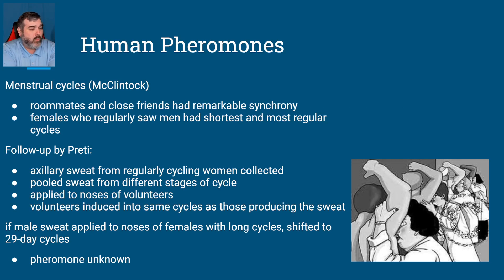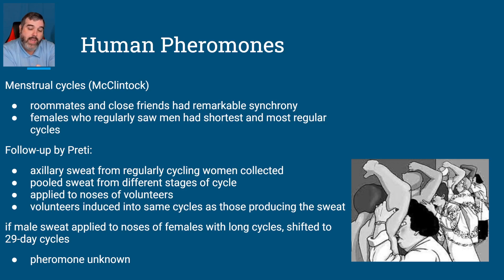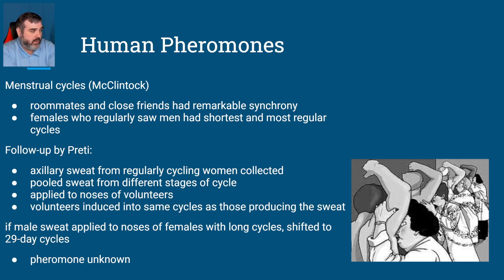Menstrual cycles: we've talked about menstrual synchrony before, where women together tend to menstruate at the same time. Females who regularly saw men had the shortest and most regular cycles. In a follow-up study, axillary sweat from regularly cycling women was collected and volunteers were allowed to smell it — they then started cycling on the same schedule. Male sweat applied to females with long cycles shifted them to 29-day cycles, though the specific pheromone was unknown.